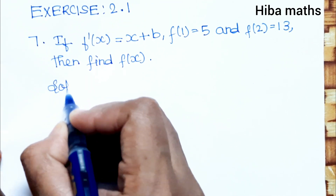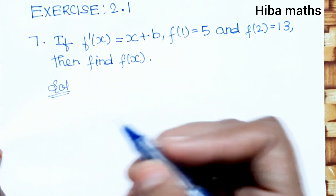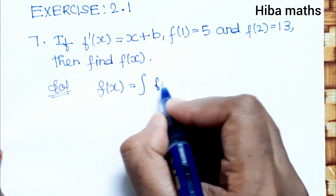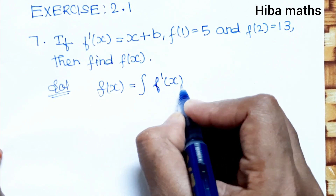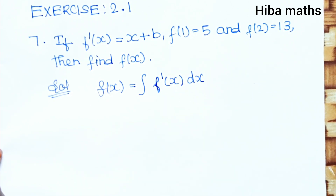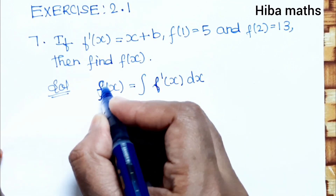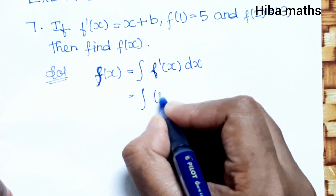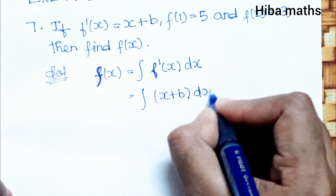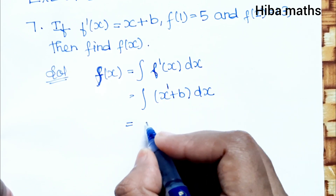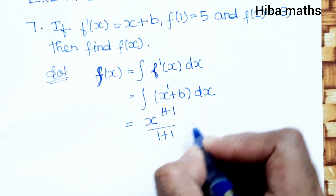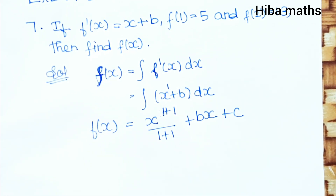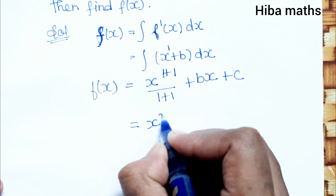So f(x) is equal to the integral of f'(x) dx. We find f(x) by integrating: the integral of (x plus b) dx gives x to the power 1 plus 1, divided by 1 plus 1, plus b times x plus c. That is, x squared over 2 plus bx plus c.